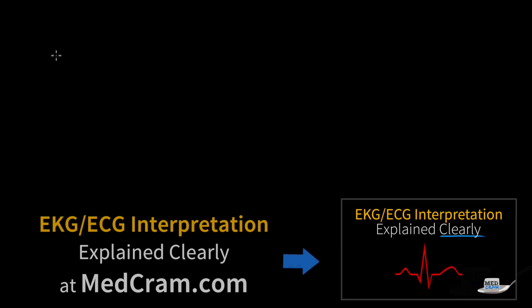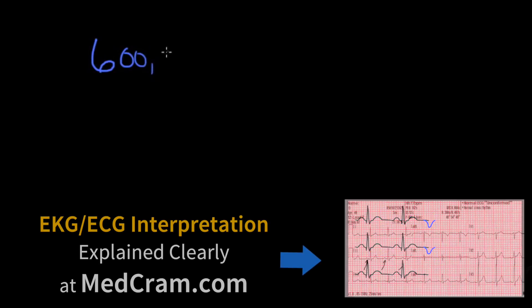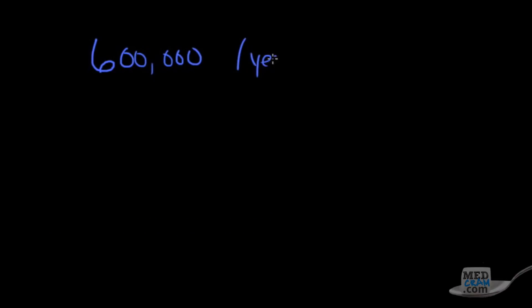What is the incidence of pulmonary embolism? Believe it or not, it's about 600,000 people per year who get a pulmonary embolism, and this results in anywhere between 50,000 and 200,000 deaths per year. That's a lot of people, so this is an important diagnosis to talk about.